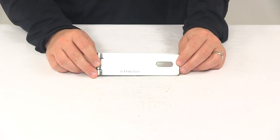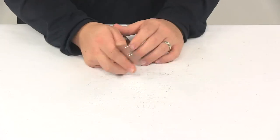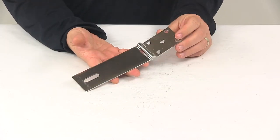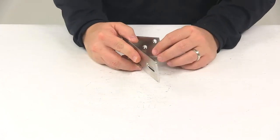Today we're going to be taking a look at the Panelok Hasp. A hasp can be used for a variety of applications. This would be great for trailers, gates, sheds, and many other uses.